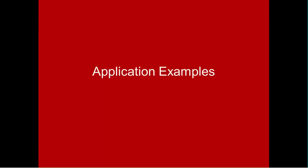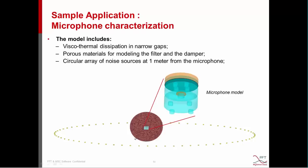Now we can see a couple of examples. The first example is a microphone characterization. The objective is to evaluate the acoustic performance of a simplified microphone using indicators such as frequency response and directivity, across a wide range of frequencies from 50 Hz to 10,000 Hz. The model includes specific features in Actran: visco-thermal dissipation in the narrow gaps, porous material for modeling the filter and damper of the microphone, and a circular array of noise sources at one meter from the microphone. The objective was to know the sensitivity of the diaphragm versus the position of the noise source.